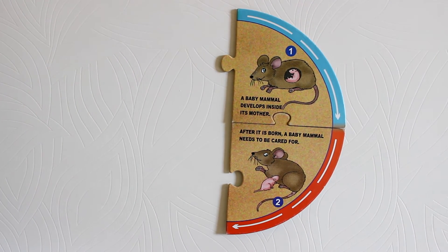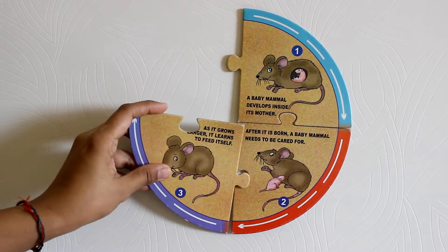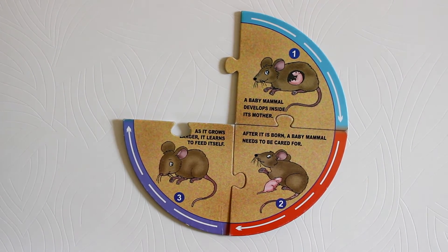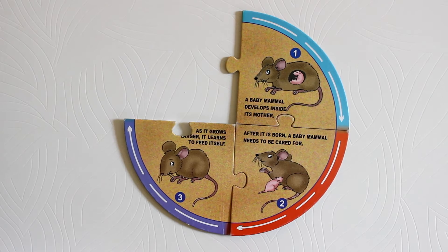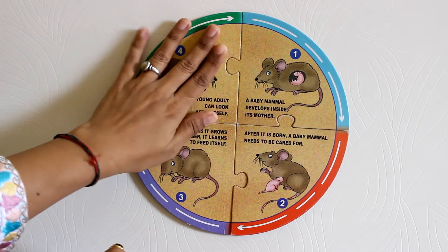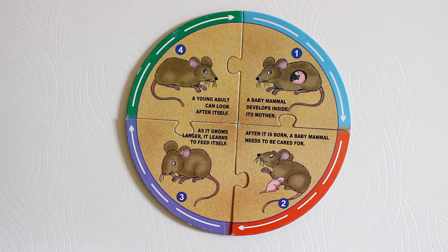Stage three: as it grows larger, it learns to feed by itself. Stage four: a young adult rat can look after itself.